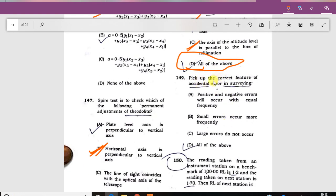Pick the correct features of accidental error in surveying. Positive and negative errors will occur with equal frequency. Small errors occur with more frequency. Large errors do not occur. The answer is all of the above.